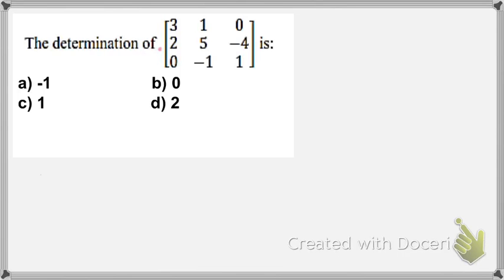How we can find the determinant of a 3 by 3 matrix. First we start by writing the first column: 3, 2, and 0, and the second column: 1, 5, and negative 1.